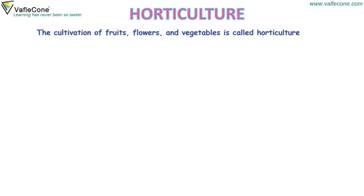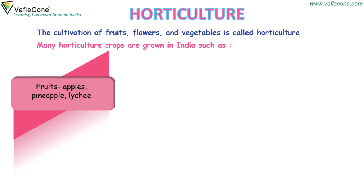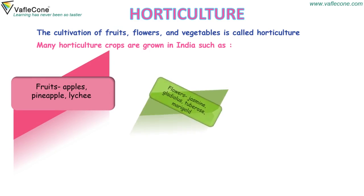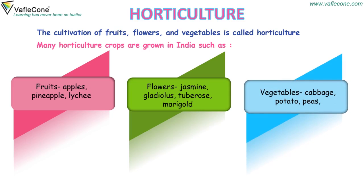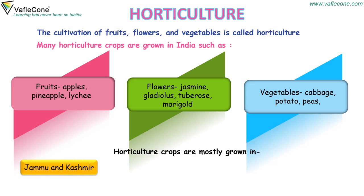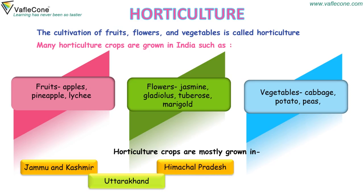Horticulture. The cultivation of fruits, flowers and vegetables is called horticulture. Many horticulture crops are grown in India such as fruits like apples, pineapple, lychee; flowers like jasmine, gladiolus, tuberose, marigold; and vegetables such as cabbage, potatoes and peas. Horticulture crops are mostly grown in Jammu and Kashmir, Uttarakhand, Himachal Pradesh, Sikkim and Northeastern states.